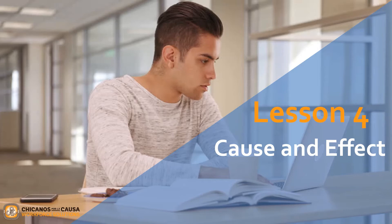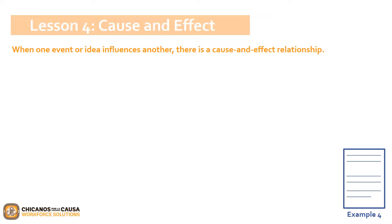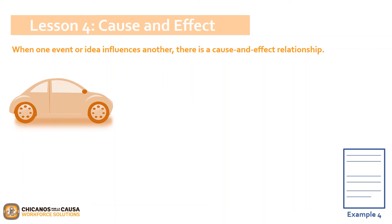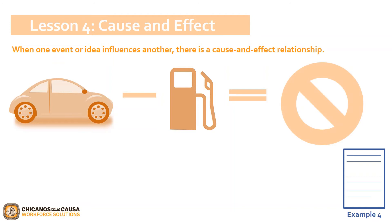We are now moving on to Lesson 4: Cause and Effect. When one event or idea influences another, there is a cause and effect relationship. To determine the cause of an event, we need to answer the question: why did this happen? Let's walk through a simple example. If we have a car and we forget to put gas in the car, the car will stop. In this example, the cause is forgetting to put gas in the car, and the effect is that the car will not move.